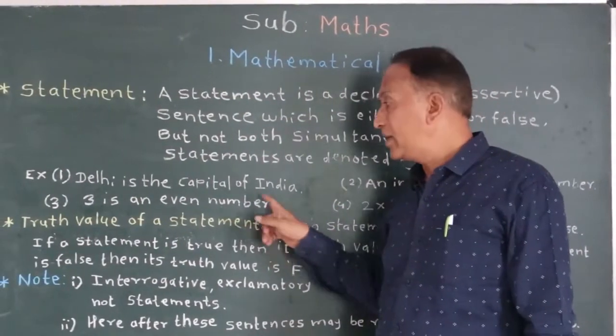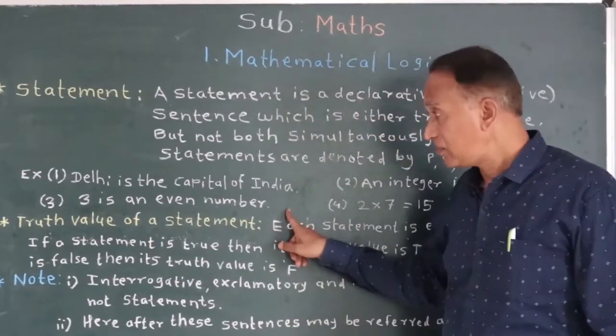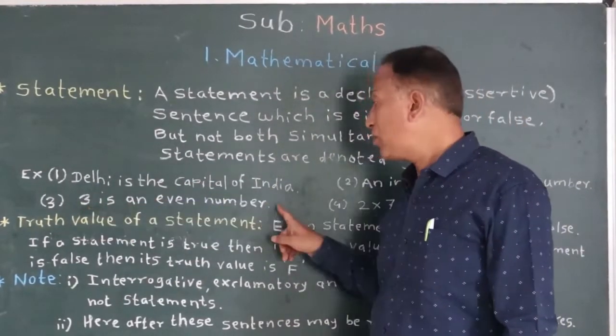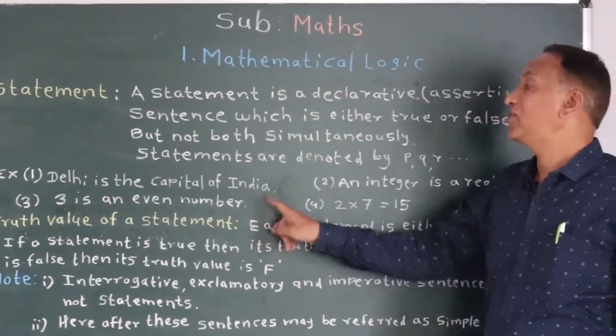Now third, 3 is an even number. This sentence is a false sentence. Because 3 is a real number. So it is a statement, but it is a false statement.